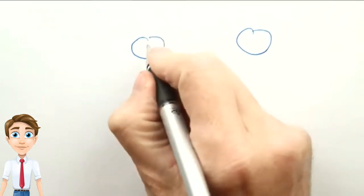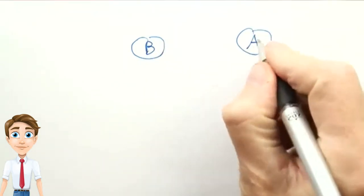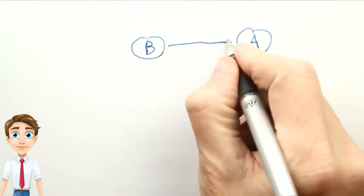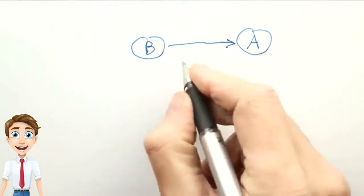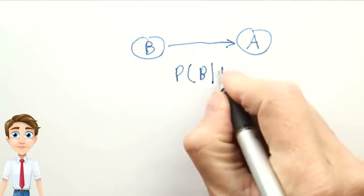Let's go back to the alarm network where we had variables for a burglary and for an alarm. Say we're interested in computing the probability of a burglary given that the alarm goes off.